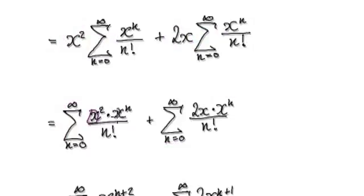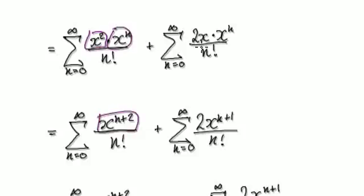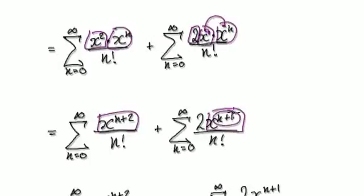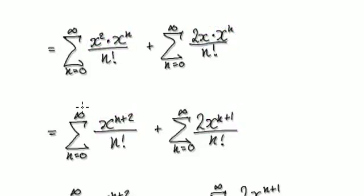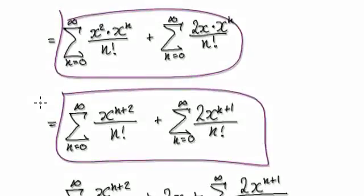Now same base, same base, so it will become 2 plus n, which is the same as n plus 2. Merging these two together will then give you this. Here you've got a block of x squared times another block — you can imagine this as x to the power of 1. So you can merge these two together, giving x to the power of n plus 1. This whole thing here will then become this.